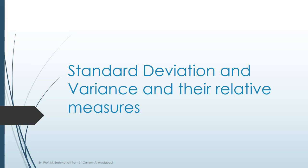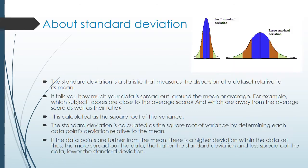Welcome to the new episode of Statistical Computing. In this session, I am going to discuss about standard deviation, variance and their relative measures. Standard deviation is a statistical measure of dispersion of a data set relative to its mean. It tells you how much your data is spread out around the mean or average.